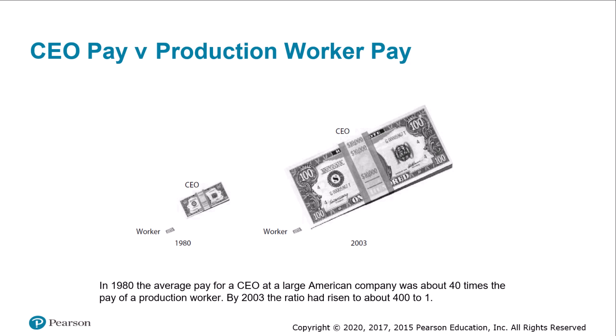Frank and Cook observed that the winner-take-all phenomenon has existed for a while in sports, entertainment, and the arts — a few superstar athletes, actors, and novelists earn millions and garner lucrative endorsements, while those performing at a slightly lower level make far less. However, the winner-take-all phenomenon has now spread throughout the global economy.